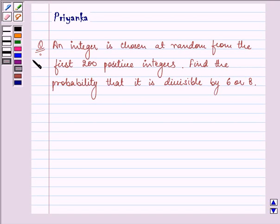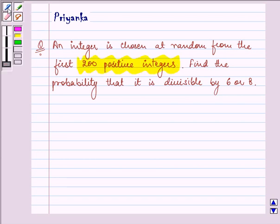Hi and how are you all today? The question says an integer is chosen at random from the first 200 positive integers. Find the probability that it is divisible by 6 or 8.